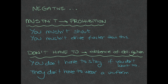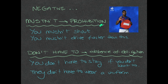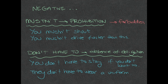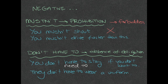When you use the negative forms, be really careful, because 'mustn't' and 'don't have to' do not mean the same thing. If you use 'mustn't', you're referring to a prohibition — something that is forbidden. So when you say 'you mustn't shout' or 'you mustn't drive faster than this', you're saying it is forbidden and you can't do it.